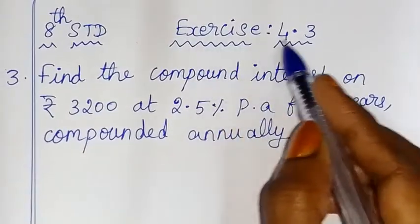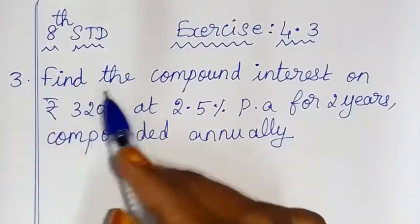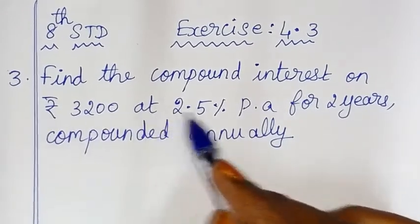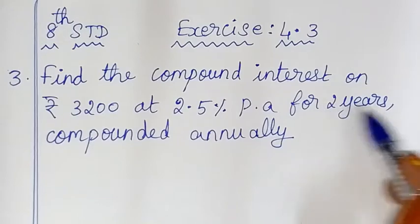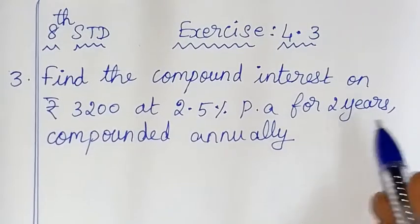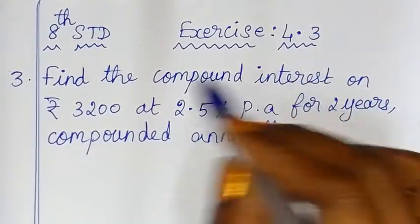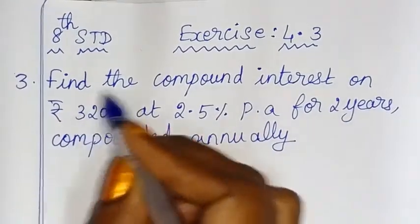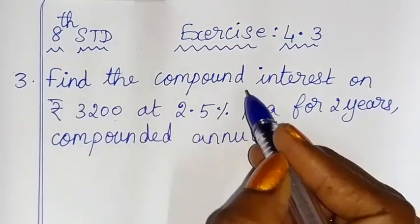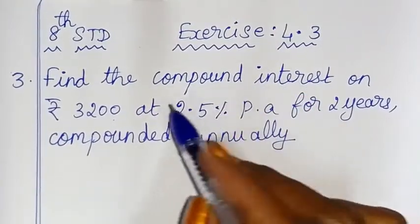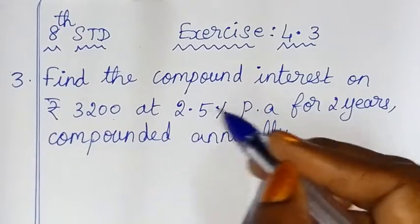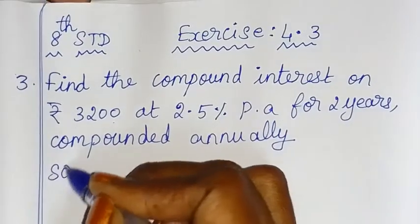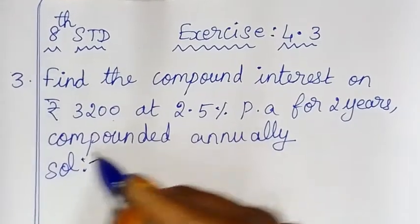In this exercise 4.3, sum number 3: Find the compound interest on Rs.3200 at 2.5% per annum for 2 years, compounded annually.